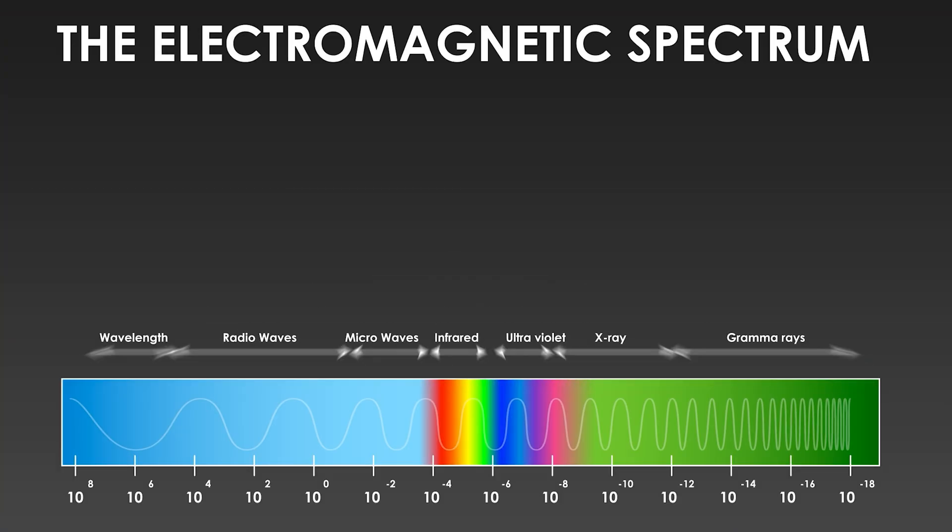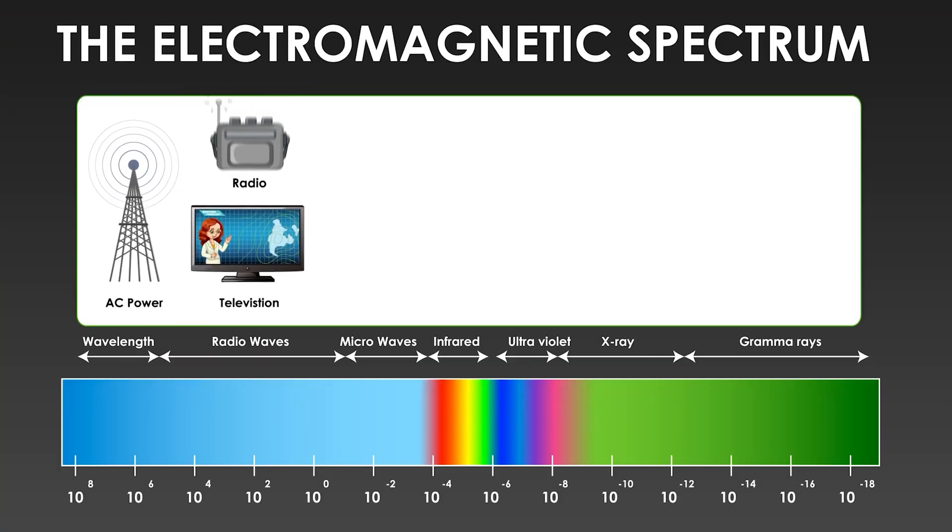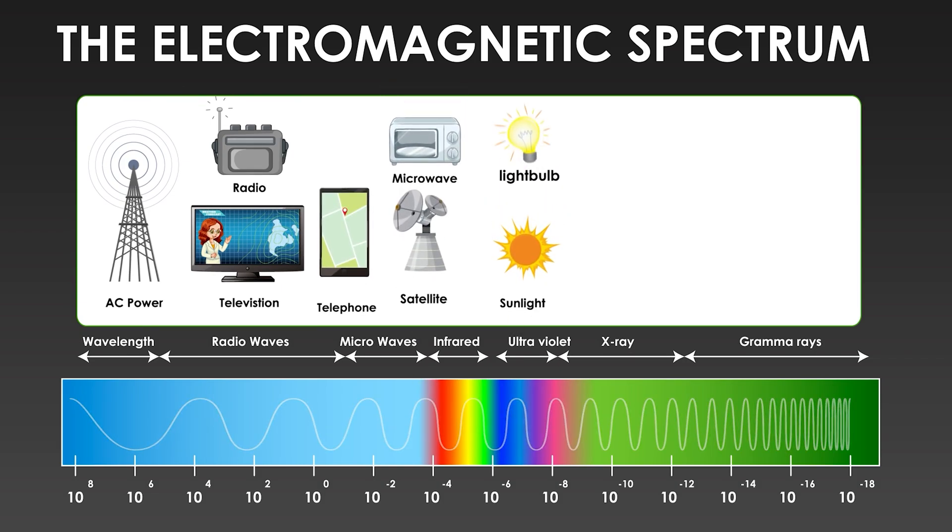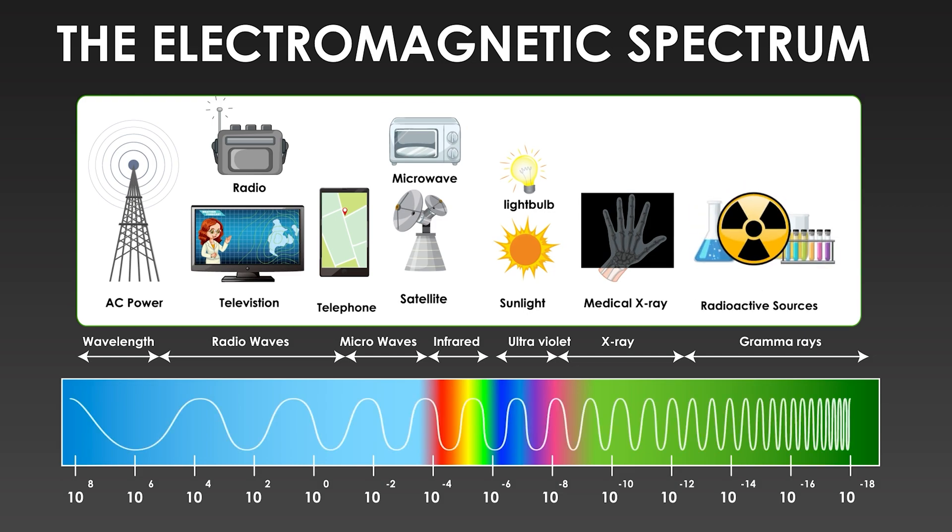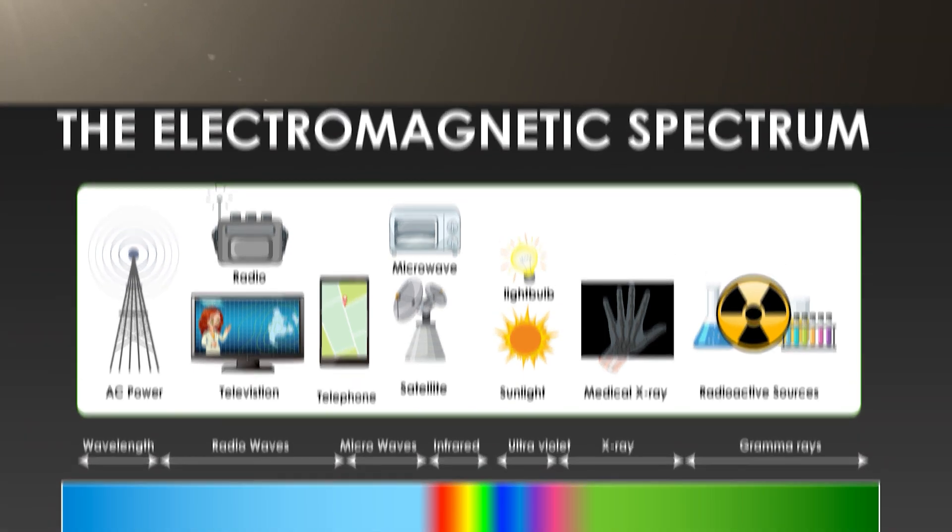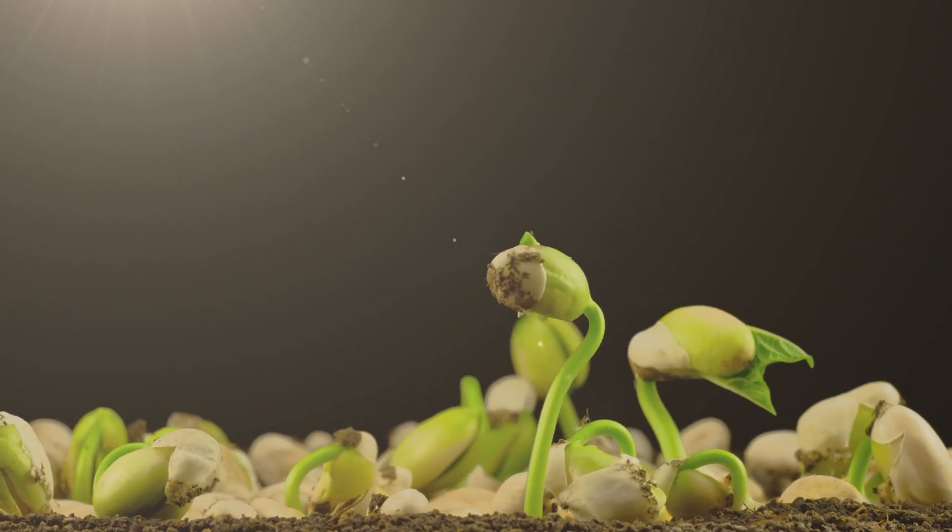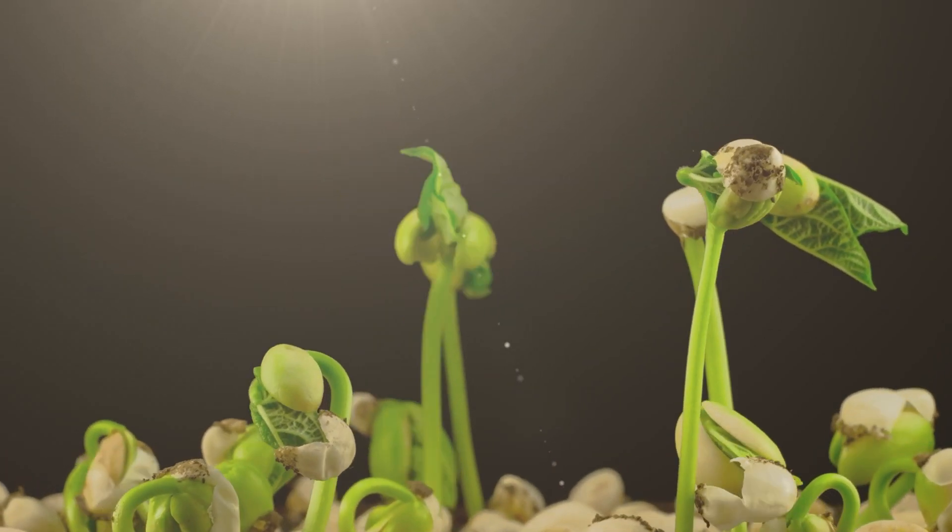Ultraviolet and infrared lights are types of electromagnetic radiation that exist within the electromagnetic spectrum that also includes visible light, x-rays, and radio waves. UV and IR radiation are not visible to the naked eye, but they can have both positive and negative effects on living organisms, including plants.